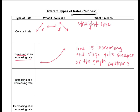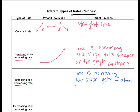Now it's increasing at a decreasing rate. The line is still increasing — and that's the tricky thing: how can a line increase but also decrease? Because you're talking about two different things. The line is increasing, but the slope gets flatter as the graph continues. It starts off really sharp, then kind of flattens out. First the slope is very steep, then it turns into a more horizontal slope, but the line is still going in a positive direction.